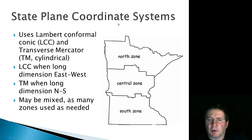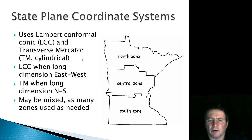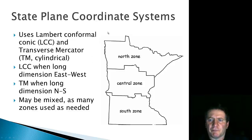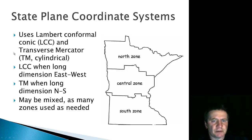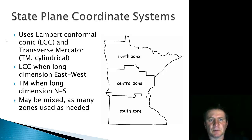State plane coordinate systems use either the conformal Lambert or Transverse Mercator projection, depending on whether it's a vertically or horizontally oriented state. That gives you a fair introduction to some of the characteristics of projections and some of the terminology you may see on maps.